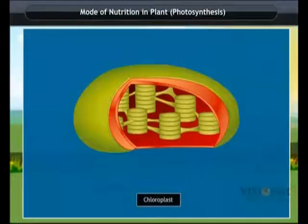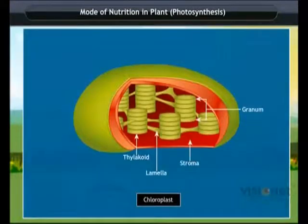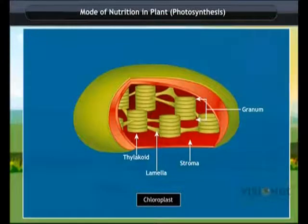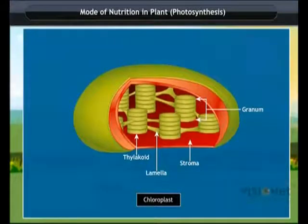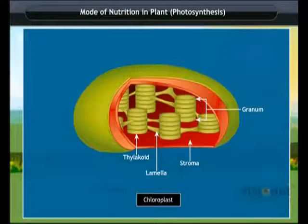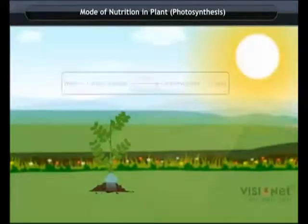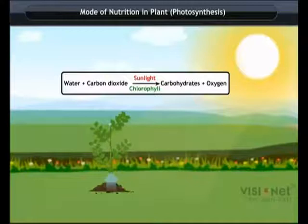The leaves have a green pigment called chlorophyll. Chlorophyll helps leaves to capture the energy of the sunlight. This energy is used to prepare food from carbon dioxide and water.